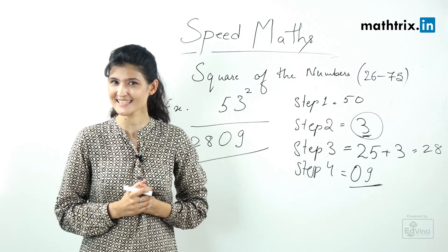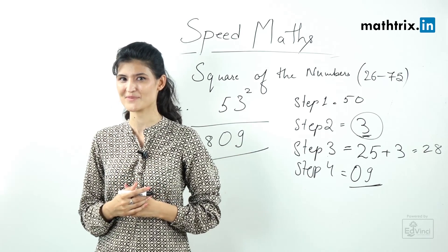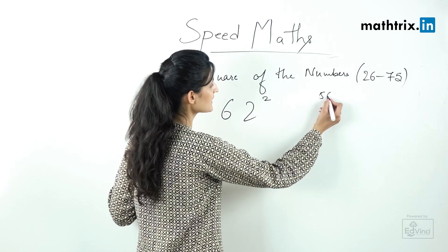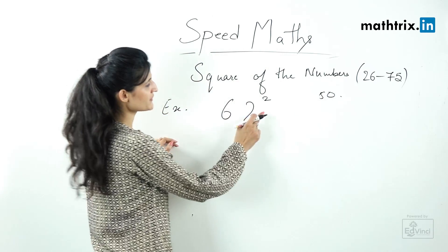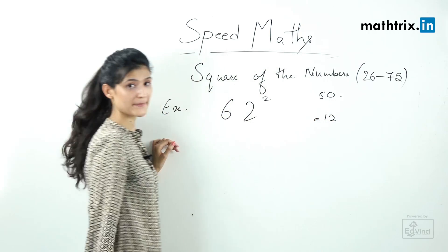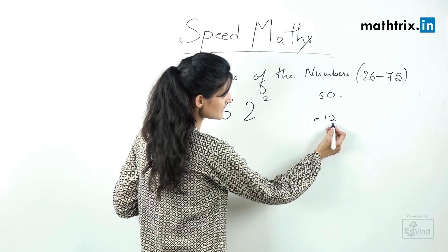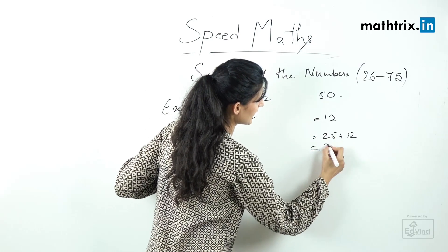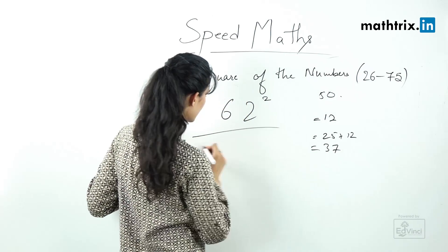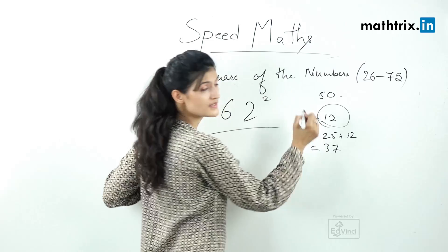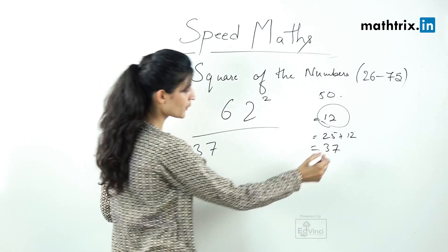Let's move to another example, 62 square. Step number one, our base is 50. Step number two, difference of the number with the base which is 12. Step number three, add this difference to the constant value 25, that means we get 37 here.